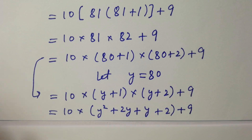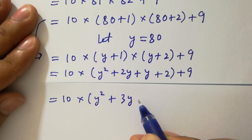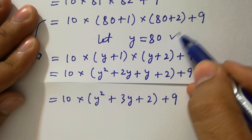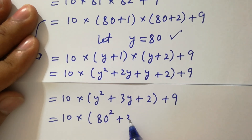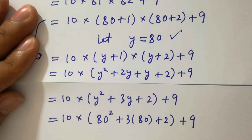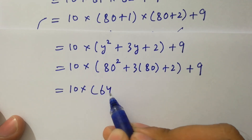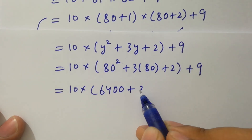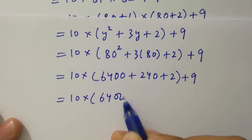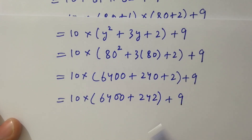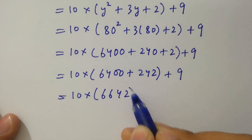Next, we have 10 times y squared plus 2y plus y, which gives us 3y plus 2, plus 9 as it is. Recalling y equals 80, it will be 10 times 80 squared plus 3y plus 2, plus 9. Computing: 8 times 8 is 64, so 80 squared gives 6400. Then 3 times 80 is 240. So we have 10 times 6400 plus 240 plus 2 plus 9, giving 10 times 6642 plus 9.